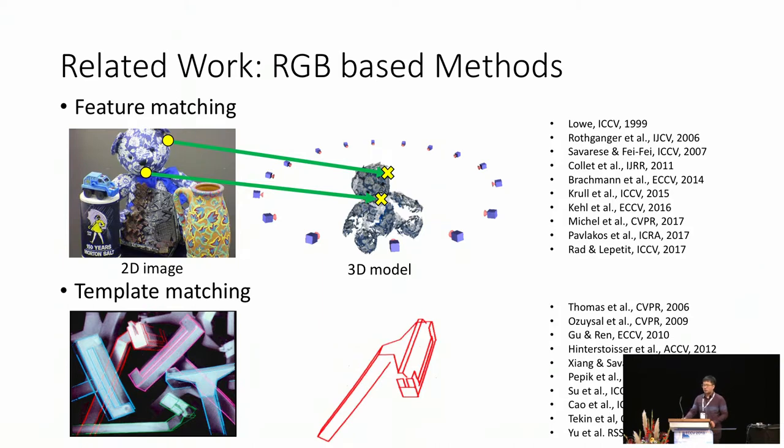There are several recent techniques using RGB-only images for object pose estimation, which can avoid such drawbacks caused by depth cameras. They either use feature matching or template matching.